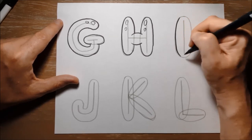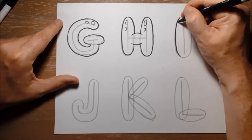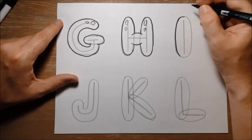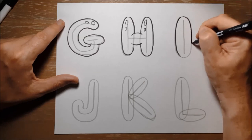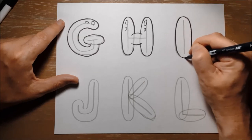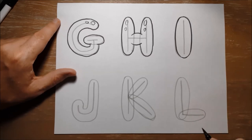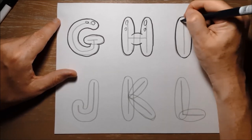The keyword we use for I is itch, so we say I itch, there we go. It's one of the easier shapes to make, I itch.